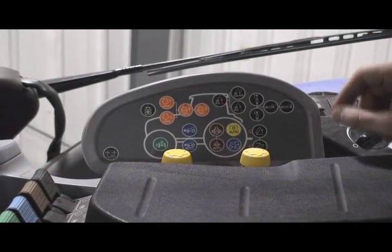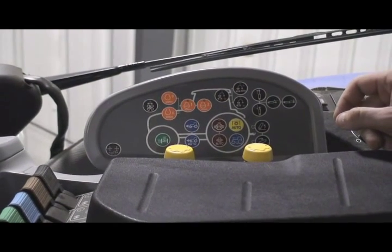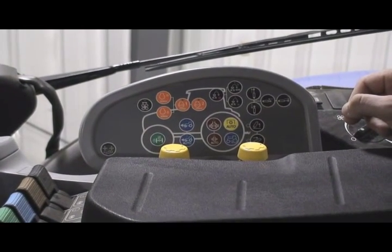Anything in blue, red, or green is related to our driveline, and finally yellow is related to our auto PTO function.